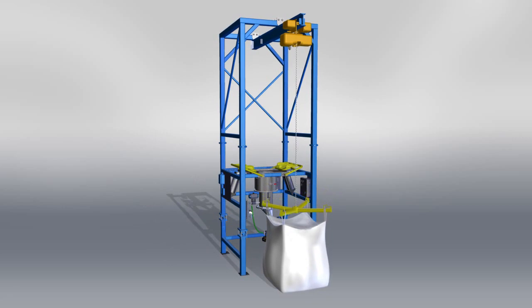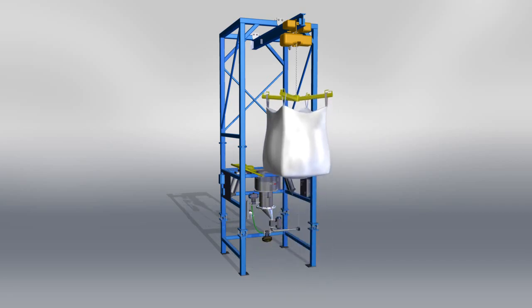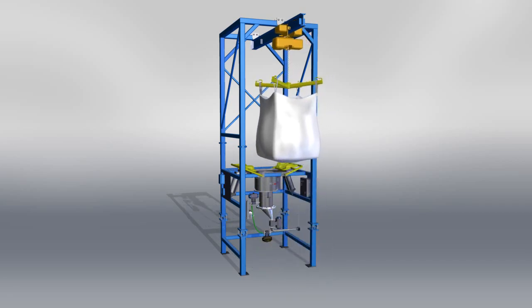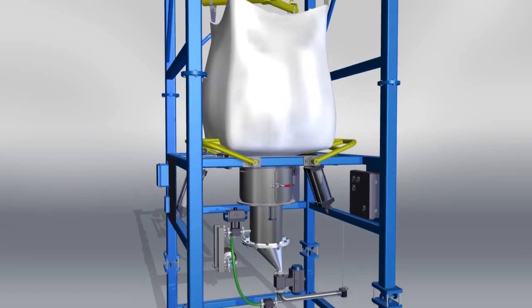First, the operator attaches the bag to the bag-lifting frame. Once secure, the bag is then pneumatically or electrically lifted using an integral hoist and trolley that positions the bag and the frame above the discharge pan.